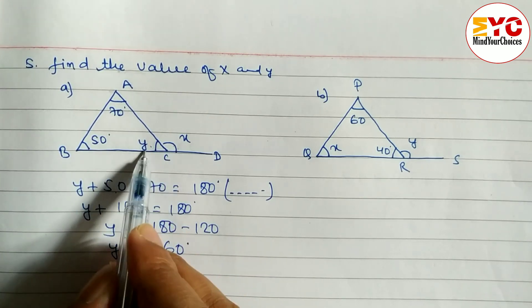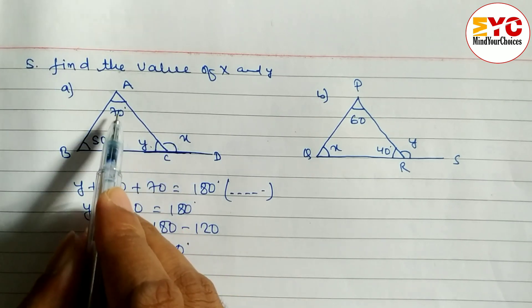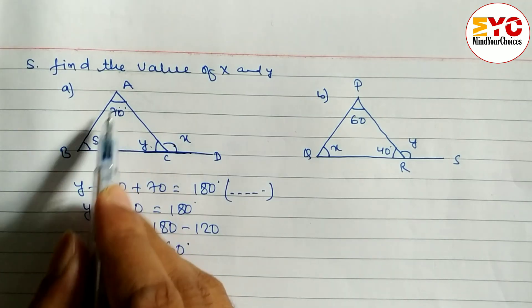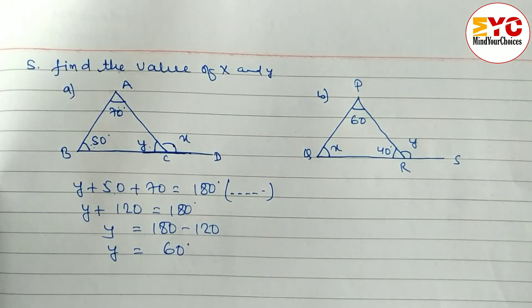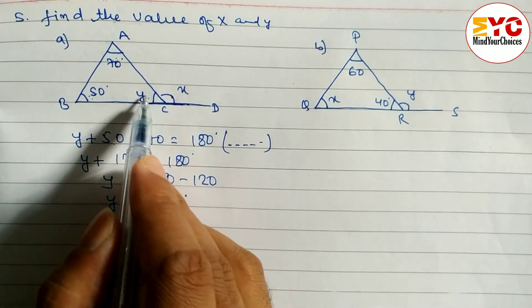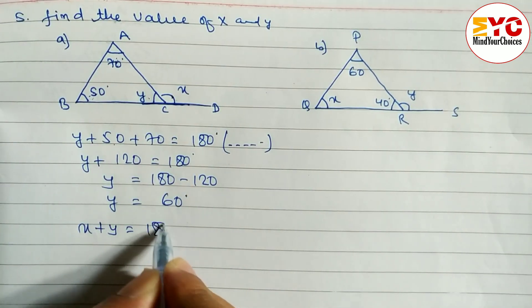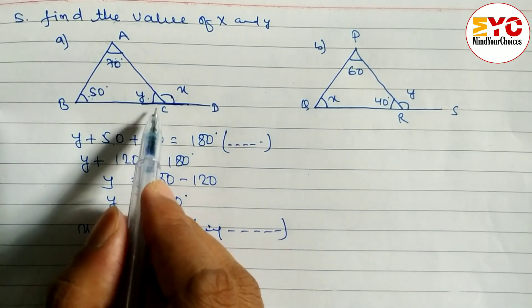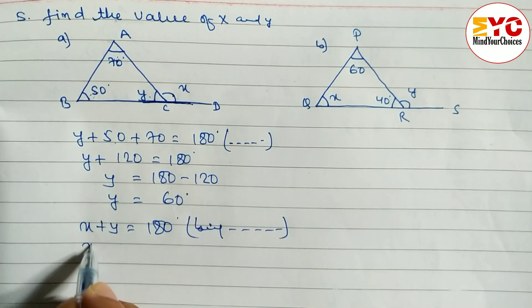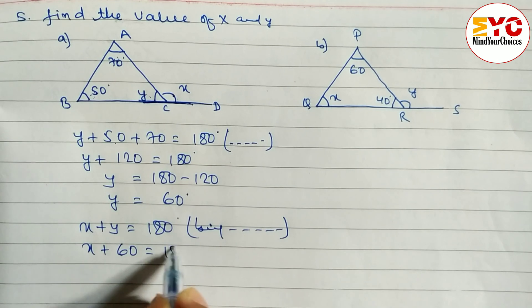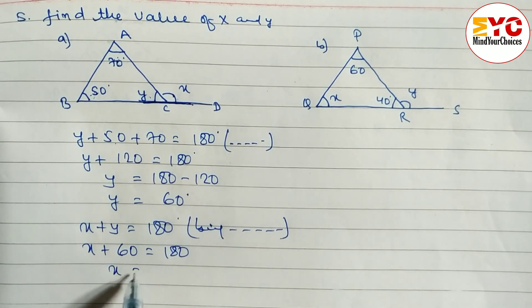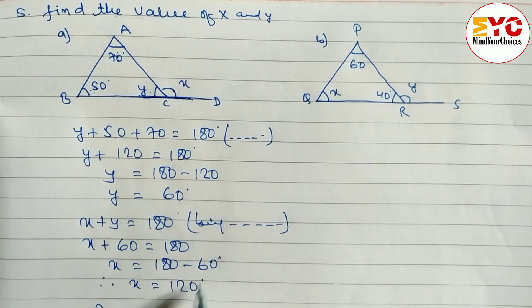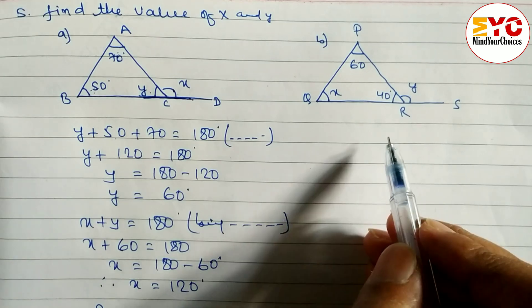Now we have to find the value of x. We can write x plus y equals 180 degrees, being a straight angle. Or you can write x equals 70 plus 50, because the exterior angle equals the sum of two opposite interior angles. So x plus 60 equals 180, therefore x equals 180 minus 60, which gives x equals 120 degrees.